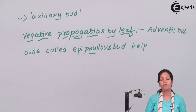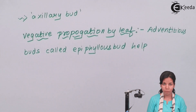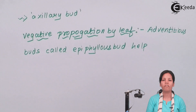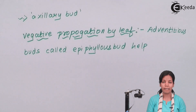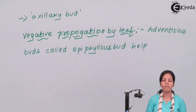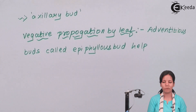Students, in this part of the chapter we studied how a part of the plant can be used to grow another plant, and this technique is called vegetative propagation. Your carrot, onions, potato, sweet potato — everything can be grown by vegetative propagation. I hope you are all clear with the concept of vegetative propagation. Thank you.